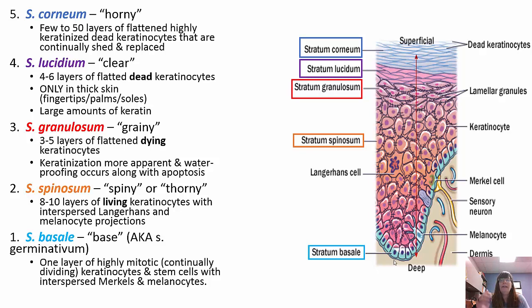The stratum lucidum is called the clear layer and is only present in thick skin — the fingertips, palms, and soles of your feet. It has a large amount of keratin. If you've looked at the soles of your feet or palms, the skin is much thicker and harder to cut compared to your forearm or leg. This extra layer of keratin provides extra protection and makes it thicker and harder to penetrate.